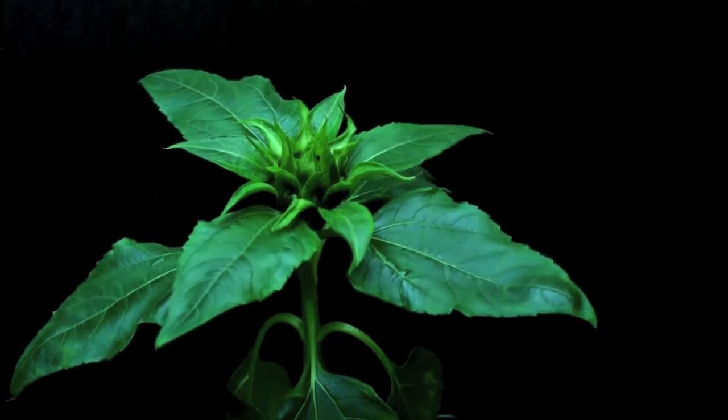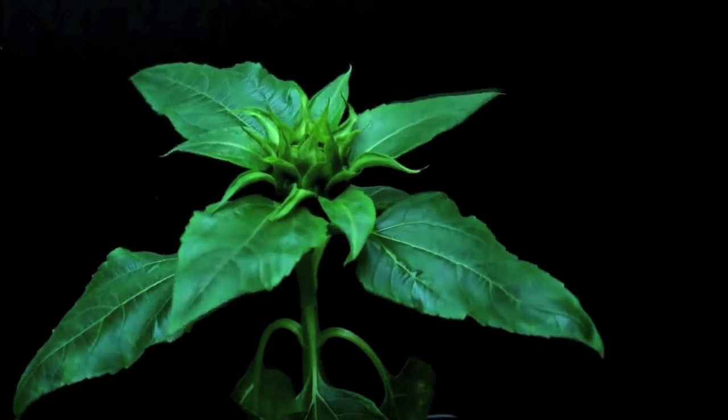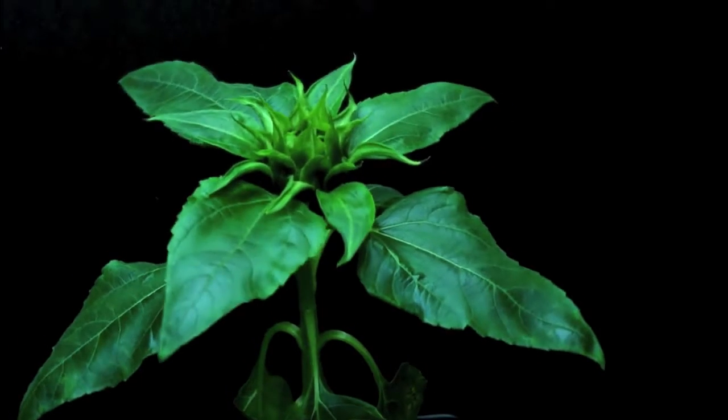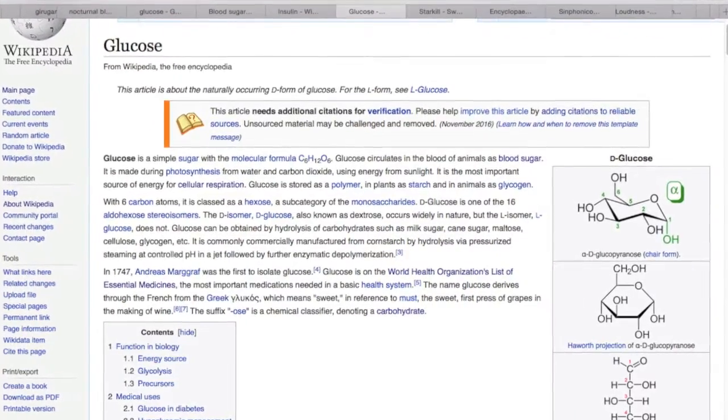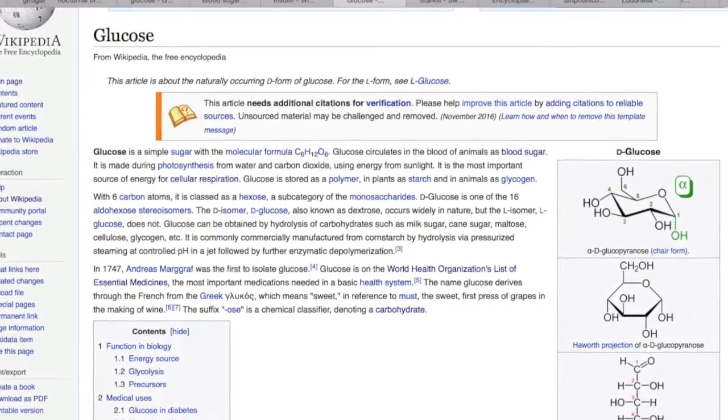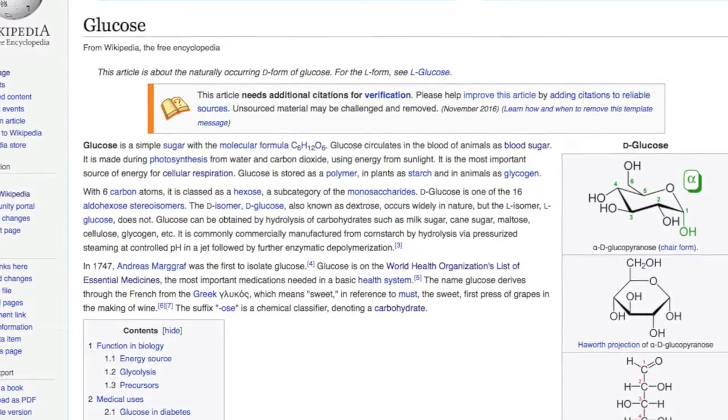Blood sugar is a necessity to life. Even other animals and plants need glucose. In fact, glucose is on the World Health Organization's list of essential medicines.